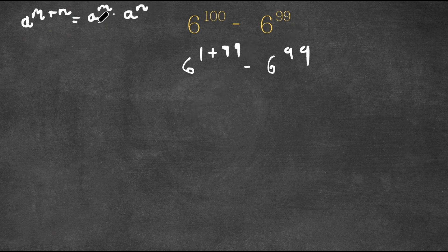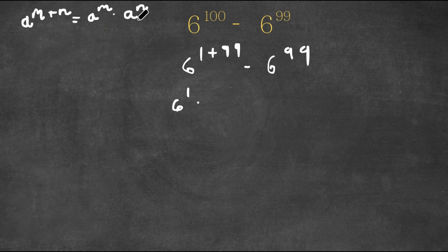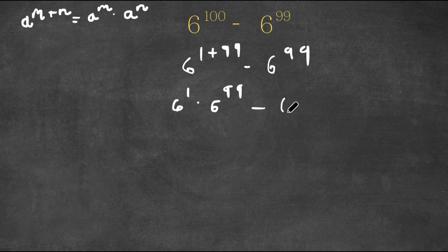This is going to equal A to the power of M — so 6 to the power of 1 — times A to the power of N — so 6 to the power of 99. And we are subtracting this with 6 to the power of 99.